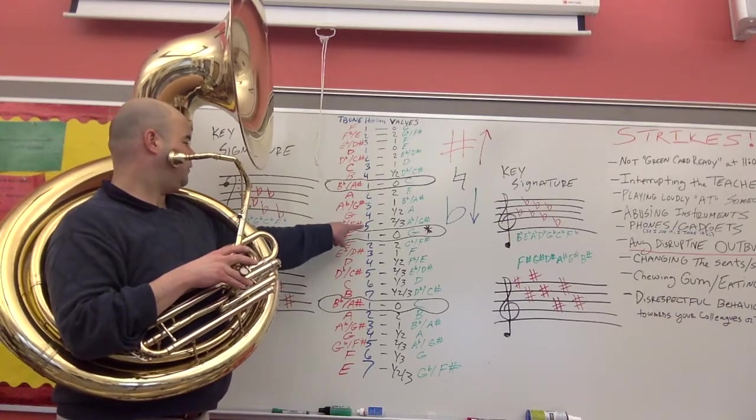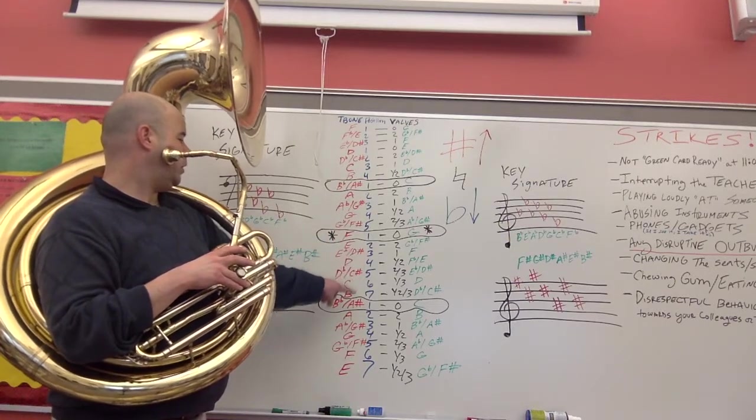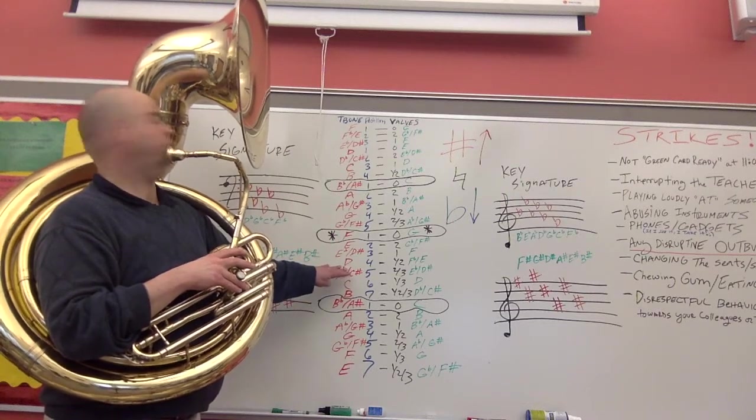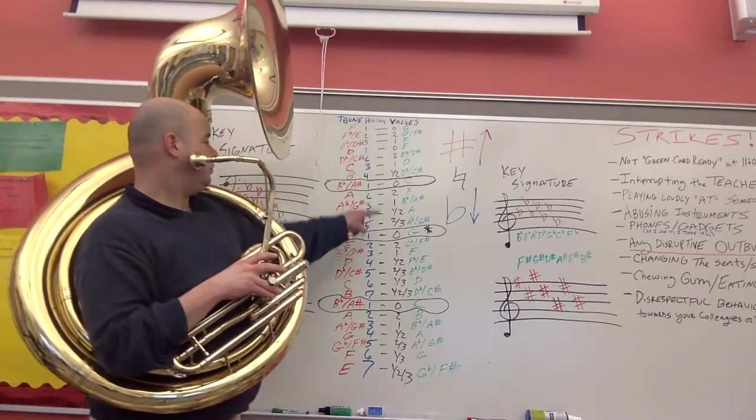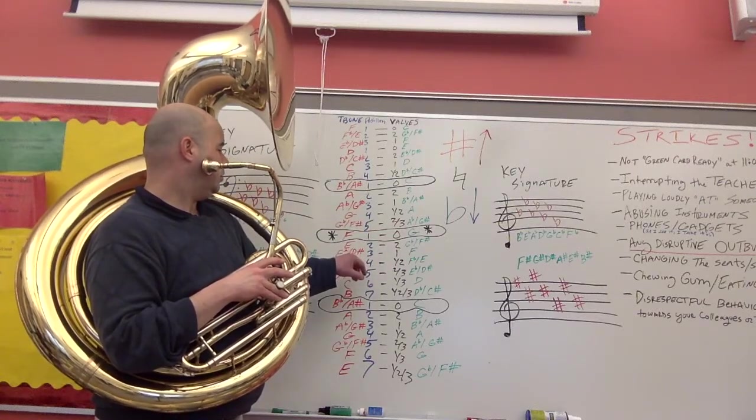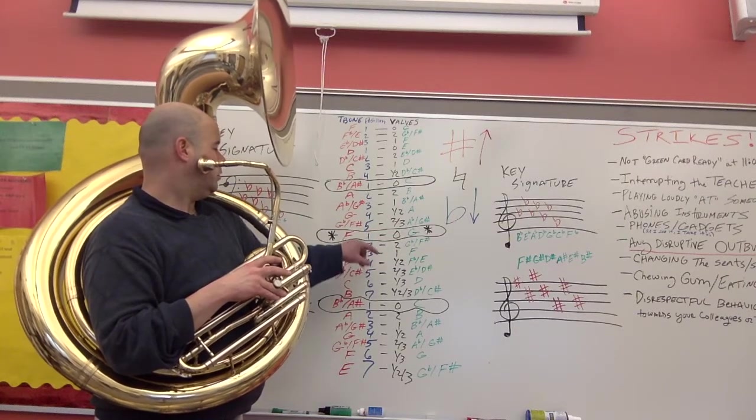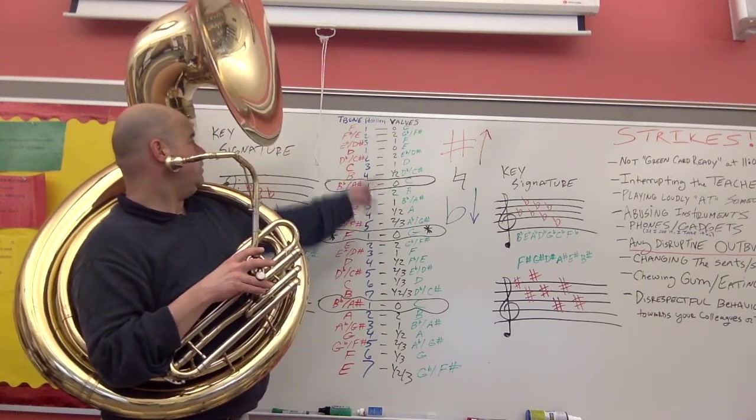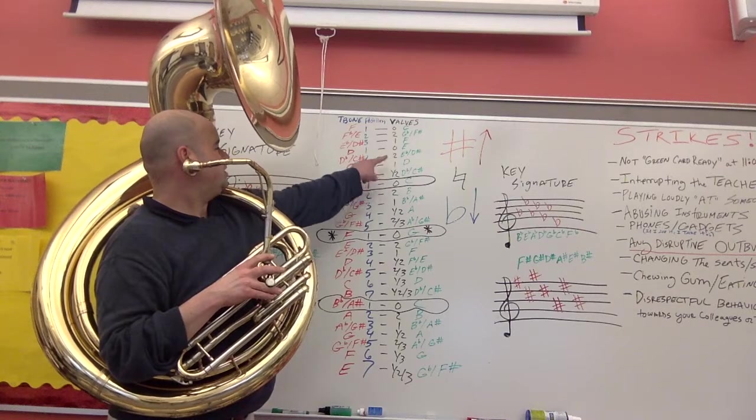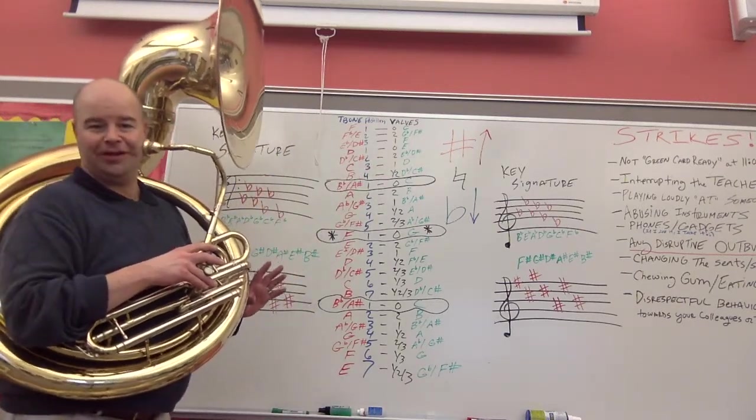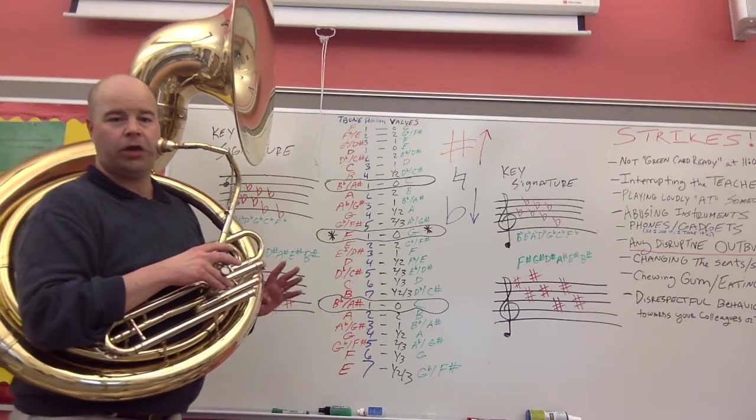Again, these are the trombone positions written in blue right here. These are the bass clef names, which trombones and tubas will use. Trumpets, these are your names. Notice they're just one higher, or actually one lower, sorry. And then, these are the valve combinations in black. These are the trombone positions in blue. I tried to color code everything so it was as clear as possible.